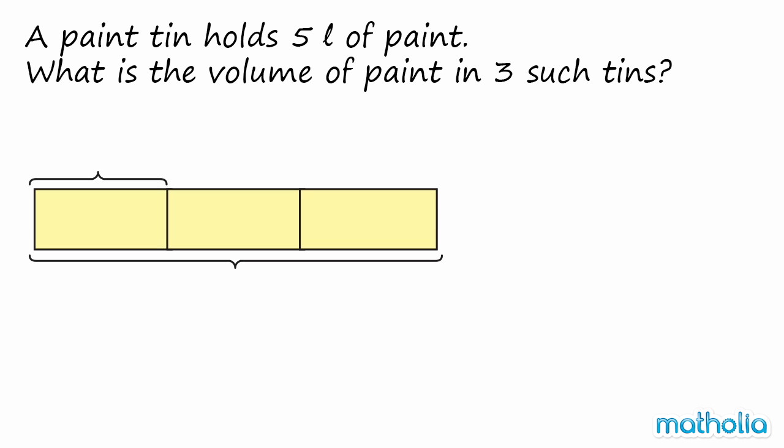Let's use a model to help find the answer. We know that in one tin, there is five litres of paint. We need to find the volume of paint in three tins. So we need to multiply five by three.